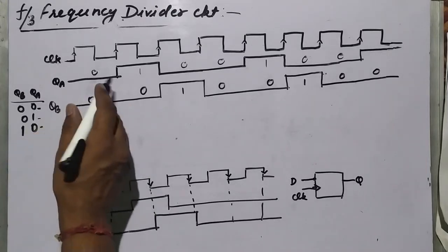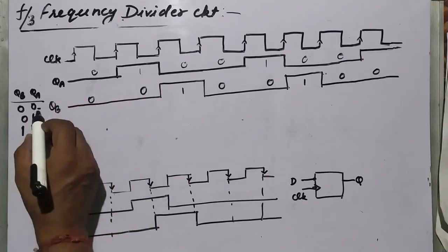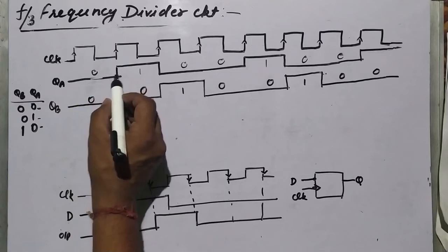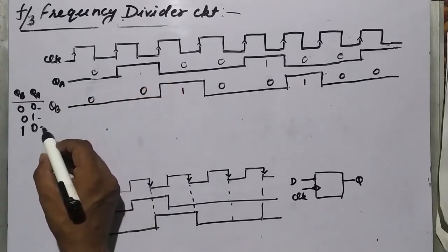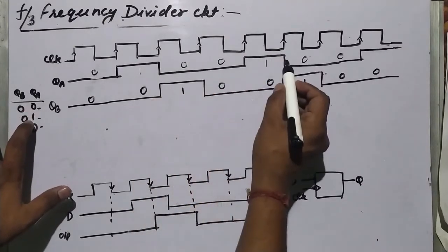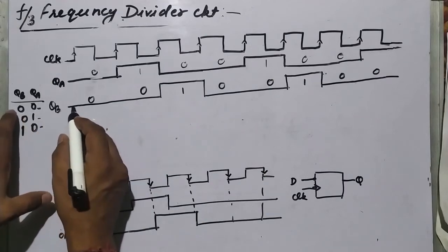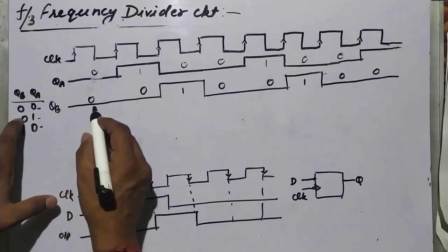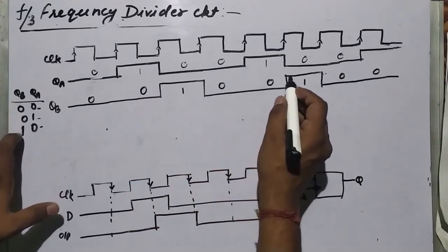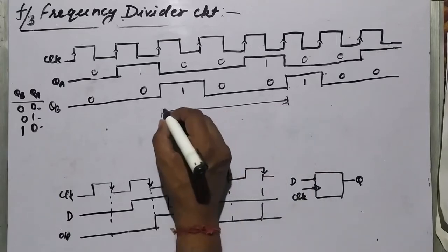We are making the waveforms to verify it really gives F/3. For QA: at the first positive clock edge it is 0, then 1, then 0, then 0, then 1, then 0, then 0, then 1. For QB: it is 0 for the first clock pulse, then 0, then 1, then 0, then 0, then 1, then 0, then 0.